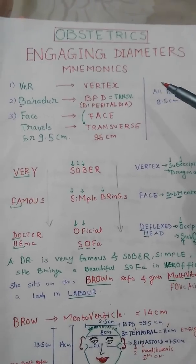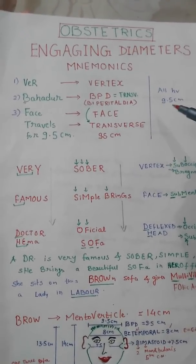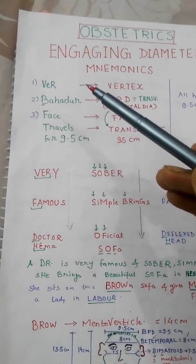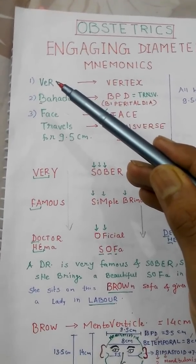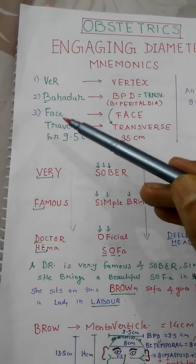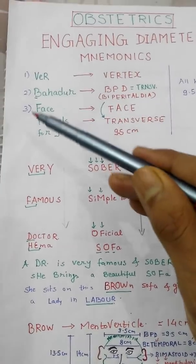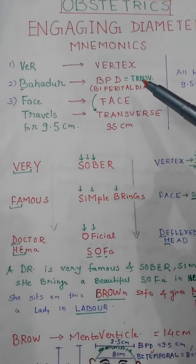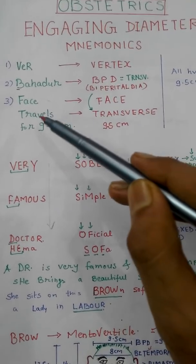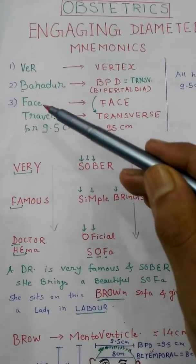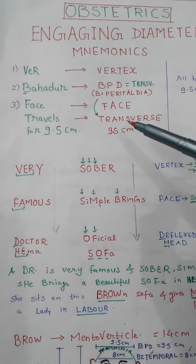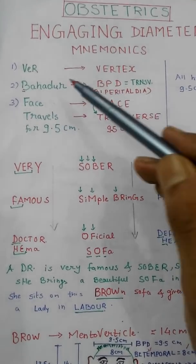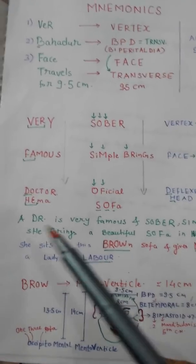First, all things having 9.5 centimeter diameter: imagine a lady in labor — labor is brave, and in Hindi the brave is called Veer and Bahadur. So 'Veer Bahadur face travels' — 9.5 centimeters. Veer is vertex, Bahadur is biparietal diameter (also called transverse diameter), face is face presentation, and travels means transverse. All these have 9.5 centimeter diameter.